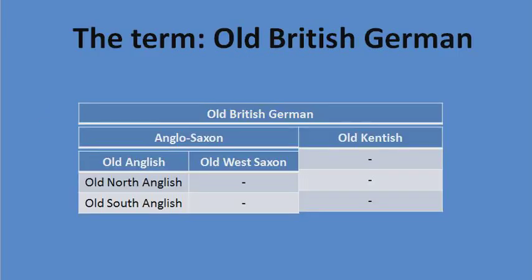We have a table to articulate this. Old British German is the overarching category, with Anglo-Saxon as a subcategory — Angle and Saxon makes sense. Within Old Anglish, we have Old North Anglish and Old South Anglish. Old North Anglish would be what is called Old Northumbrian, and Old South Anglish would be Old Mercian. I coined these terms to keep the discourse focused on historical linguistics and historical phonology, because using terms like Mercian or Northumbrian leads people into political history and associations that can sidetrack the linguistic discussion.